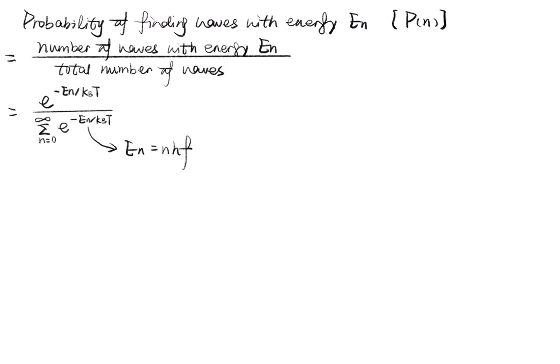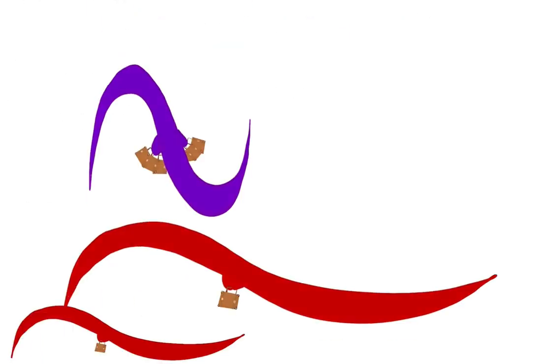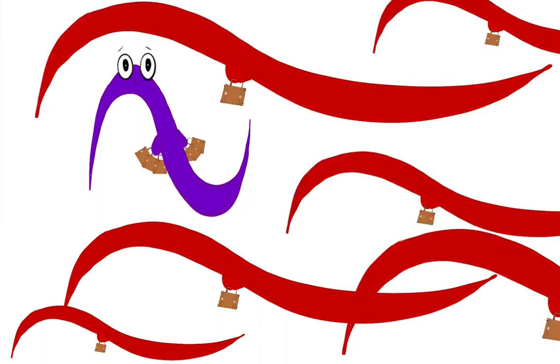By taking discrete values, calculations show that the higher the frequency of the wave, the lower the probability of finding it.